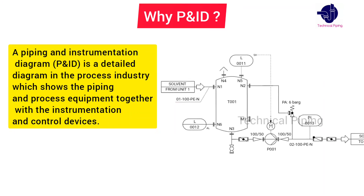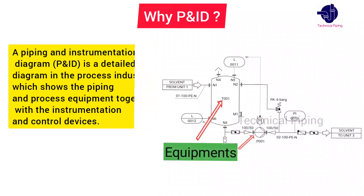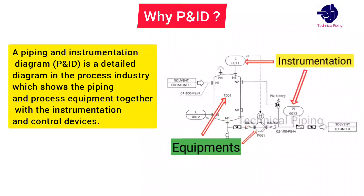Let's understand why P&ID is needed in industries. A piping and instrumentation diagram (P&ID) is a detailed diagram used in the process industries, showing the piping and process equipment together with the instrumentation and control devices.